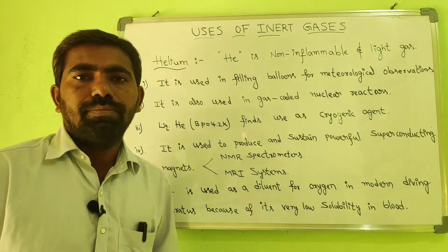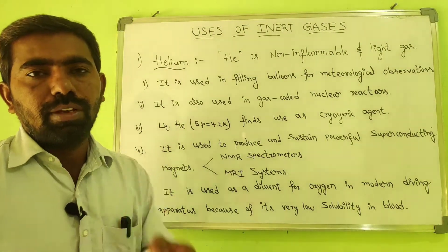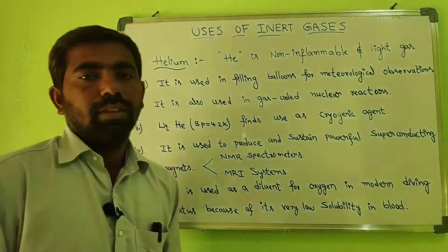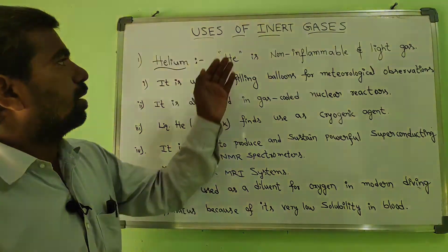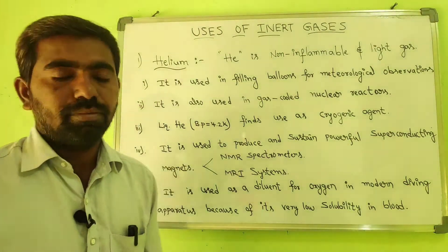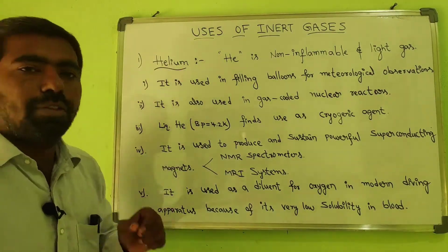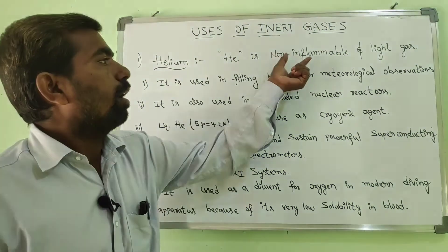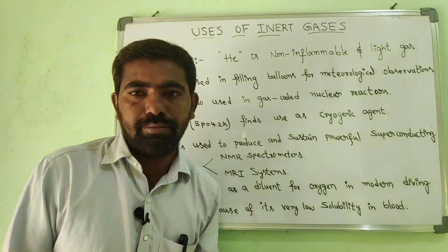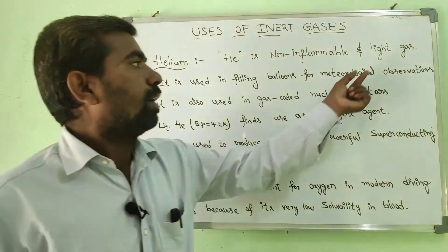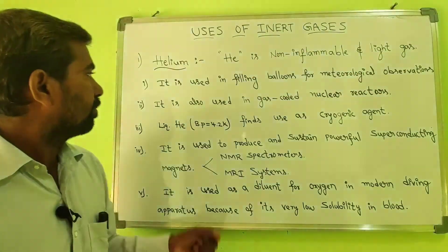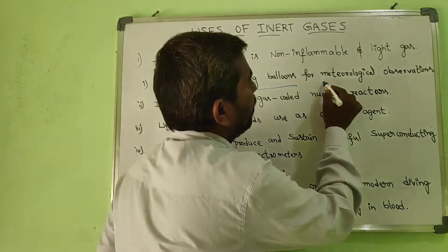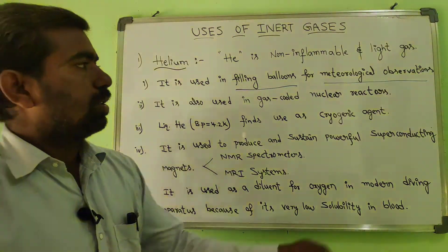Hello everyone, today I am going to explain the concept of uses of inert gases. In this class, I am discussing some uses of inert gases. Helium is the first element of the 18th group elements. It is non-inflammable and a very light gas. Due to those reasons, it is used in filling balloons for meteorological observations.